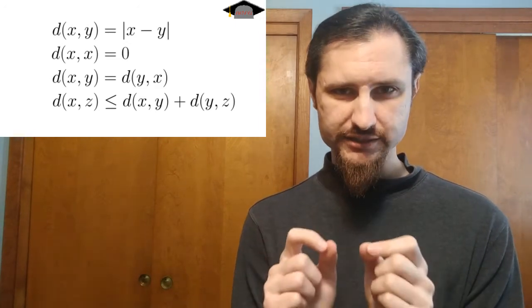Now, here's the kicker. This is not the only way to define a metric for the rational numbers. The other way we do it is what we call the p-adic metric.